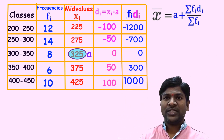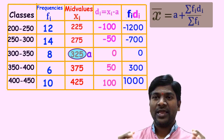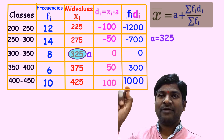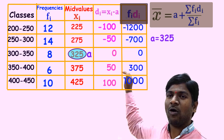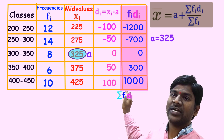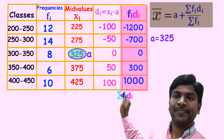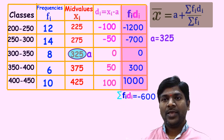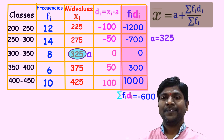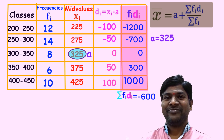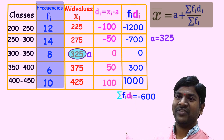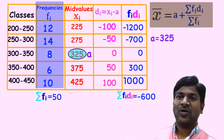Now applying the formula x̄ = a + (Σf_i d_i) / Σf_i. We have a = 325. Σf_i d_i is the sum of all f_i d_i values: (−1200) + (−700) + 0 + 300 + 1000 = −600. Σf_i is the sum of all frequencies, which is 50 — already given in the question as the number of workers.